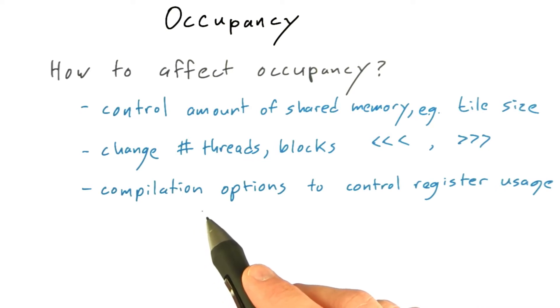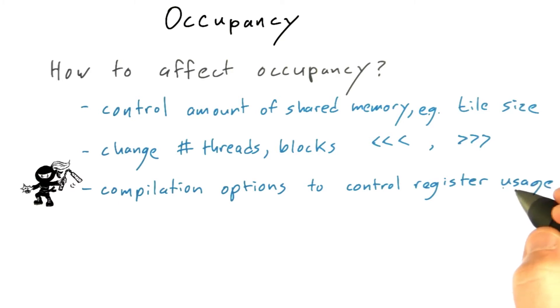You can also work with a compiler to control the number of registers a kernel uses, though this qualifies as a ninja-level optimization and isn't usually worth the trouble.